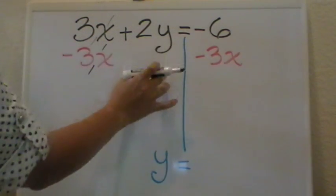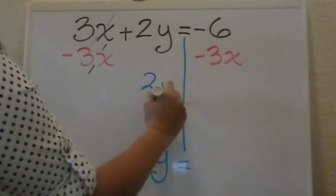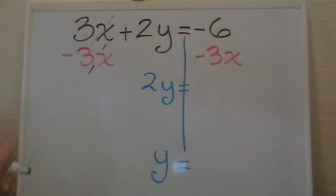What I have left on this side would be 2y. And on this side, I have two unlike terms. I have a number and a term with the x variable.